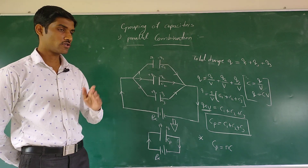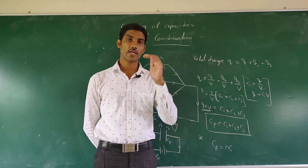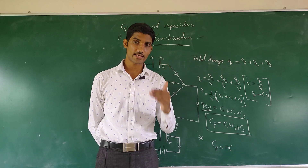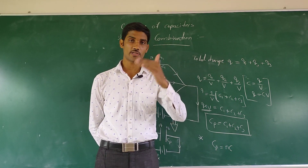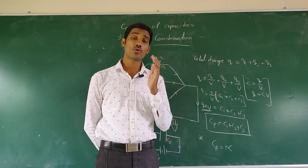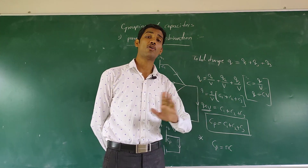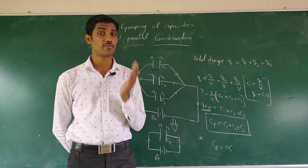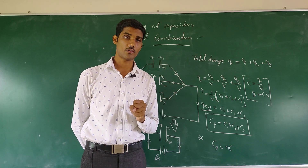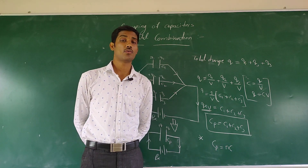To compare: for the series combination of capacitors, 1 over Cs equals 1 over C1 plus 1 over C2 plus 1 over C3. For the parallel combination, Cp equals C1 plus C2 plus C3. That's all for now; next class we will continue.